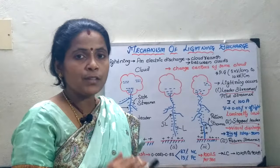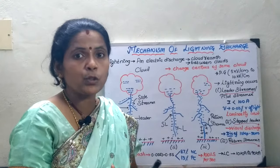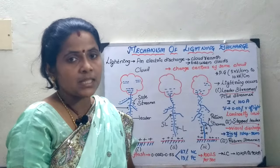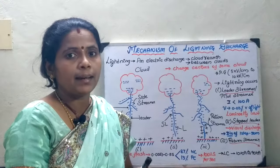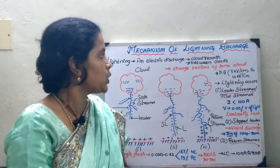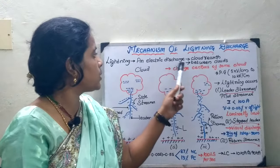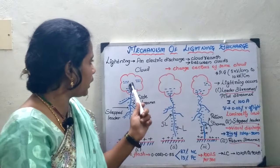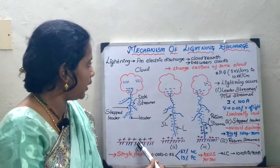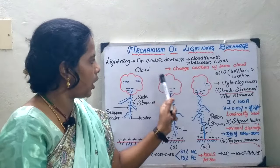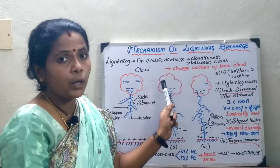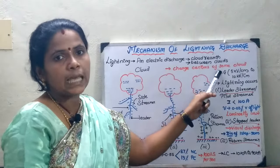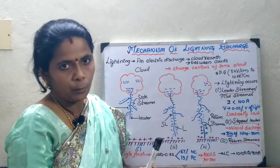Lightning is a huge spark — an electrical discharge which occurs between the cloud and the earth, between clouds, or between the charge centers of the same cloud.